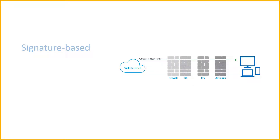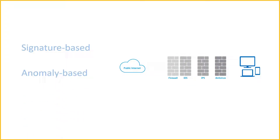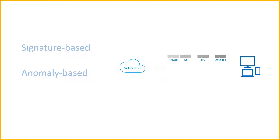One drawback of the signature-based method is that it can only stop previously identified attacks and won't be able to recognize new ones. The next is anomaly-based, which monitors for abnormal behavior by comparing random samples of network activity against a baseline standard. It is more robust than signature-based monitoring but can sometimes produce false positives.